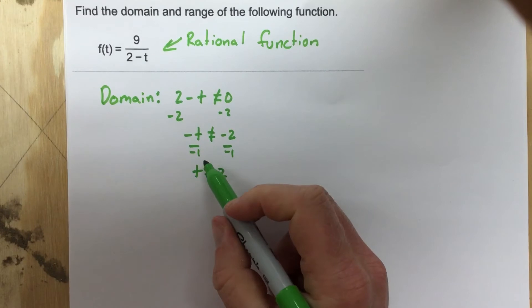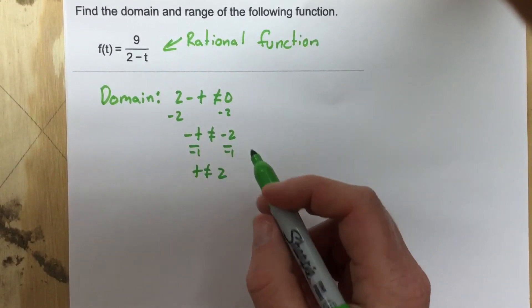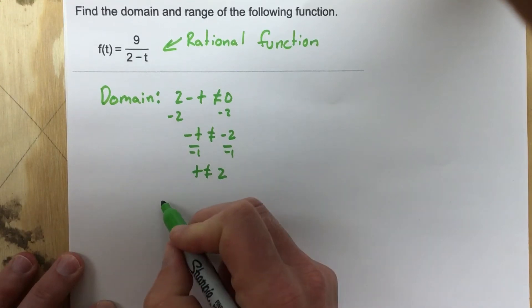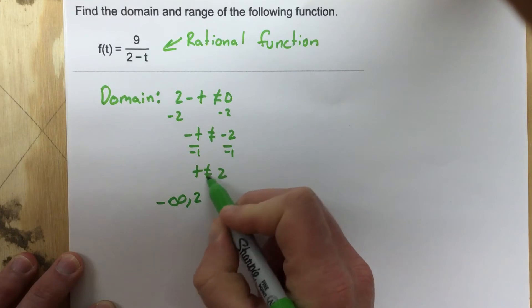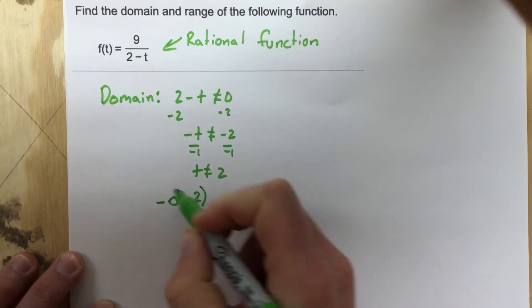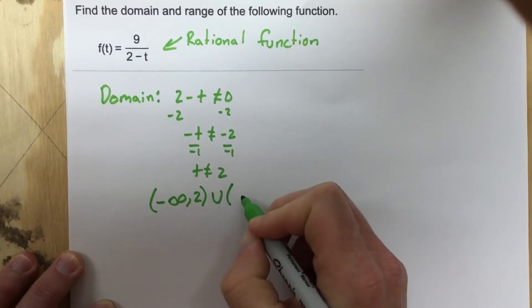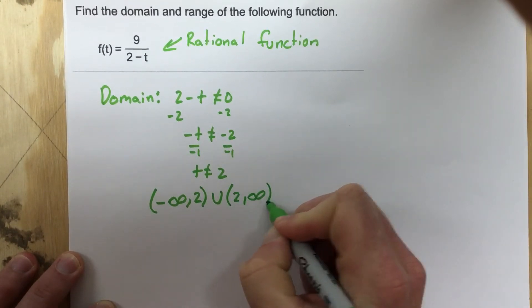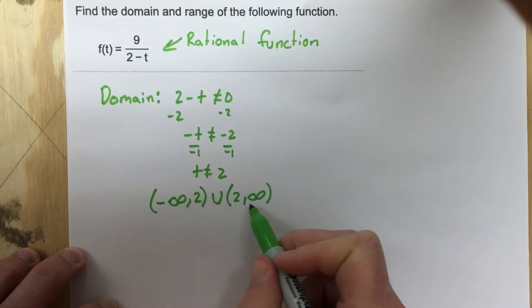So that means that our domain can be any number except for the number 2. So the domain of this function is going to run from negative infinity to 2 but can't be 2 and then from 2 to infinity. So the domain is negative infinity to 2 union 2 to infinity.